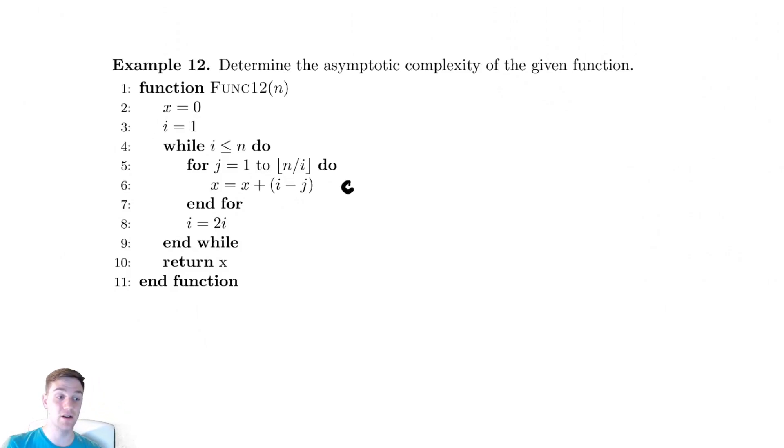The cost of the stuff inside the for loop is constant. The cost of all of the code inside the while loop, that for loop runs n over i times, so the cost of all of the code there in orange is cn over i.